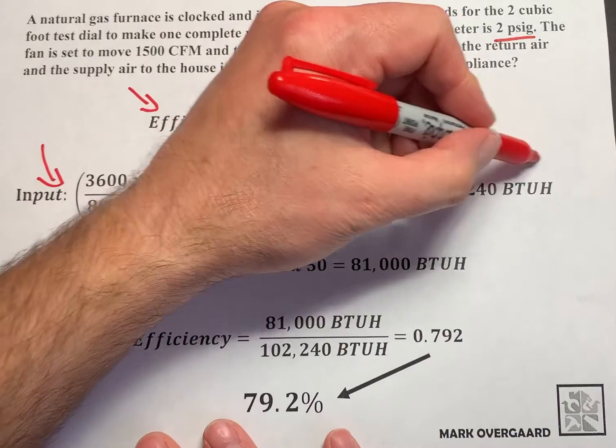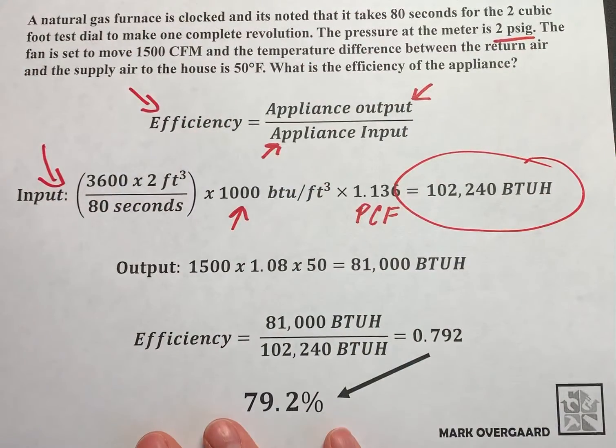From all that what we get is 102,240. So that's what we put in. That's our input.